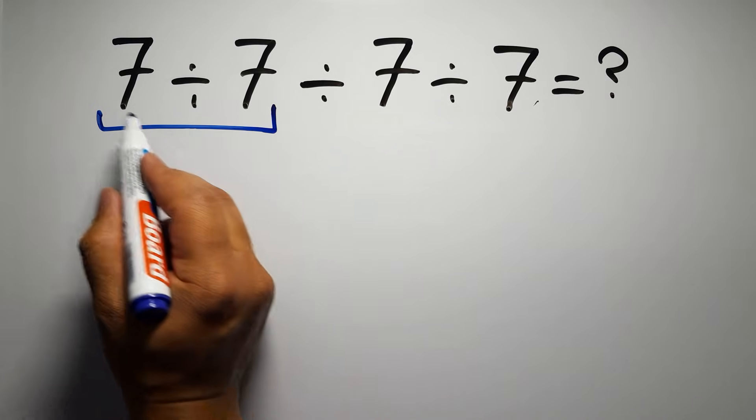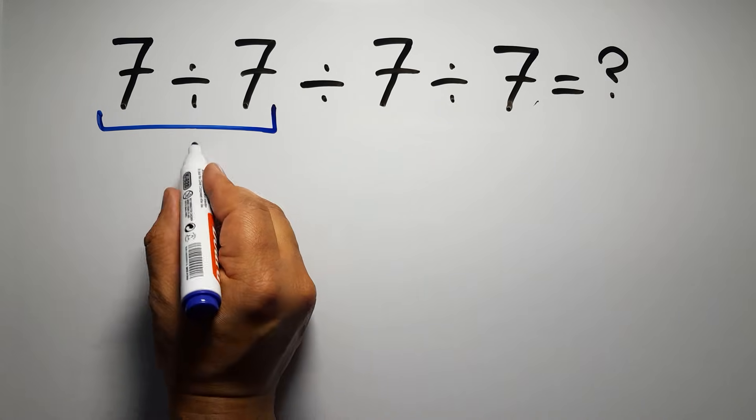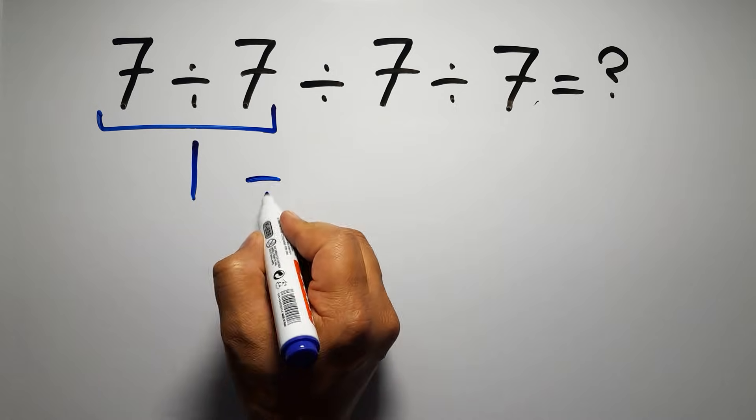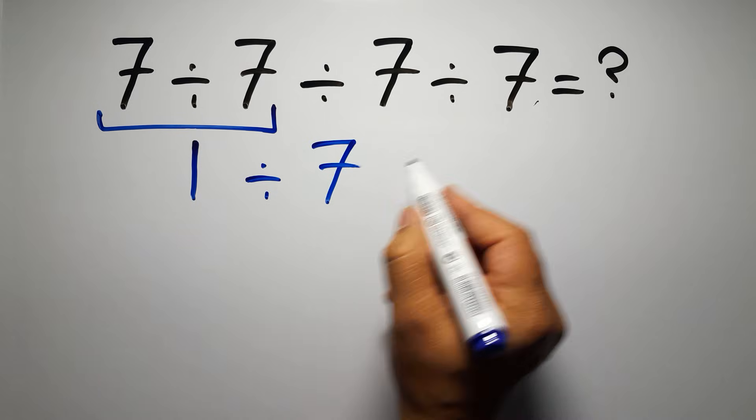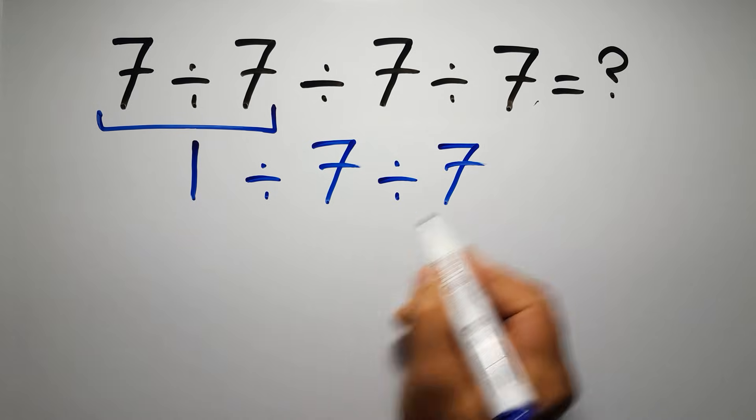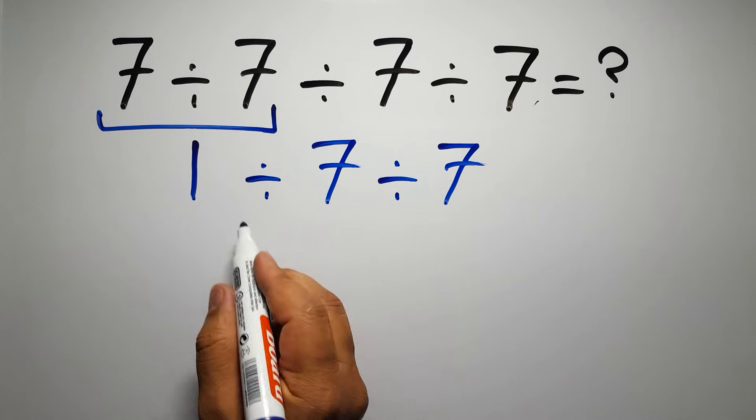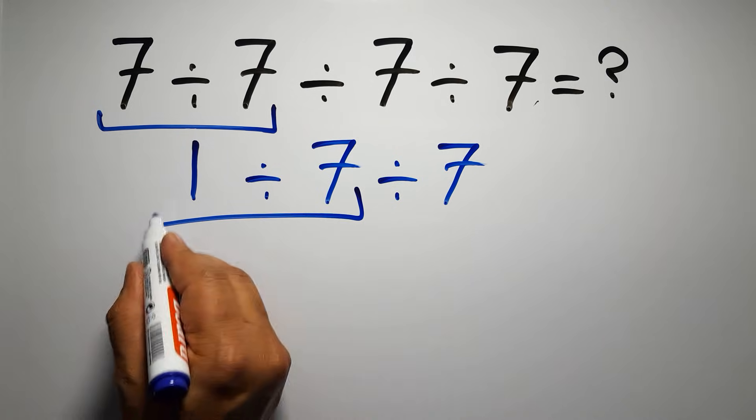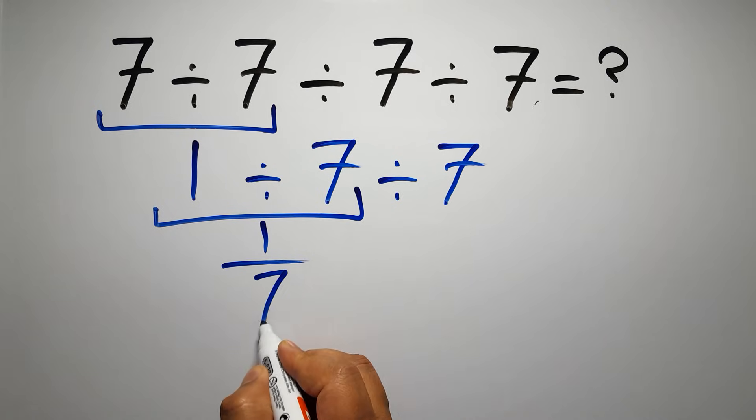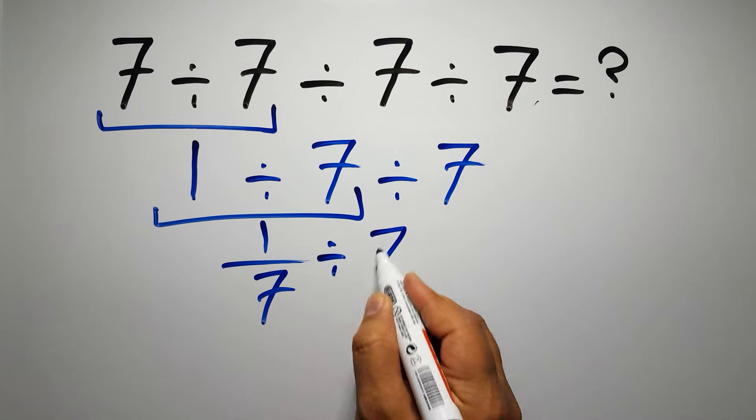So first this division: 7 divided by 7 is just 1, so 1 divided by 7, and again divided by 7. Now we have to do this division. 1 divided by 7 can be written as 1 over 7, then divided by 7.